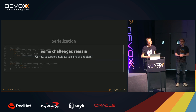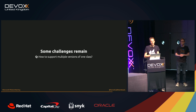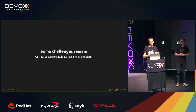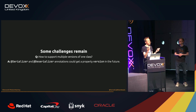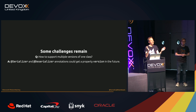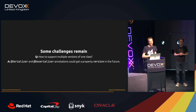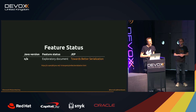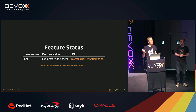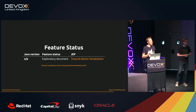Some challenges remain, such as supporting multiple versions of a class. One idea is to add a version property to the serializer/deserializer annotations, allowing multiple annotated methods each handling a specific class version. There's a document by Brian Goetz, as part of Project Amber, called 'Towards Better Serialization' — you can read it via the link provided. The feature is very much in the future, but you can follow its development.